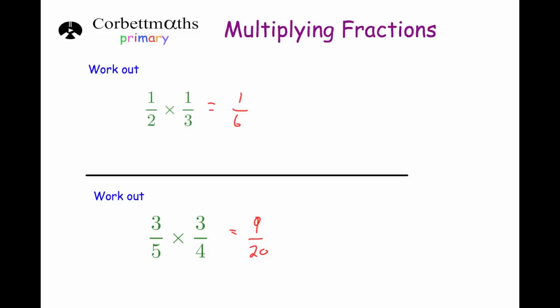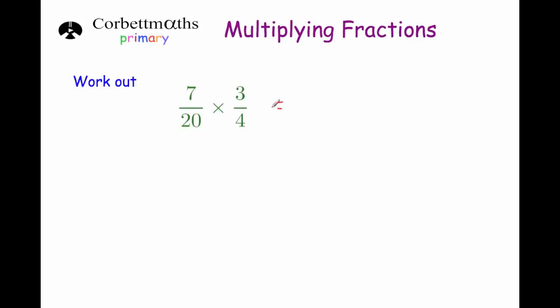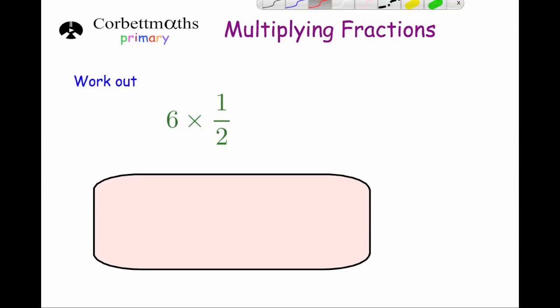To multiply a fraction by a fraction, just multiply the numerators together and the denominators together. Our last example: 7 twentieths times 3 quarters. Multiply the numerators — 7 times 3 is 21 — and the denominators — 20 times 4 is 80 — so the answer is 21 eightieths.